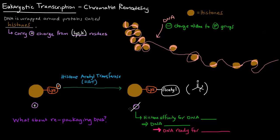To neutral charges. So now the histones, the histone affinity for the DNA has decreased. And because of that, DNA is unpackaged. And when it's unpackaged, DNA is ready for transcription. So that is how eukaryotes prepare for transcription.